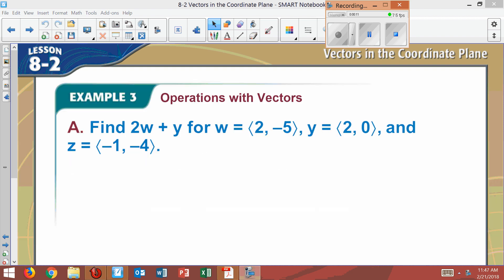So here it says find 2w plus y, with this being vector w, this being y, and z here.